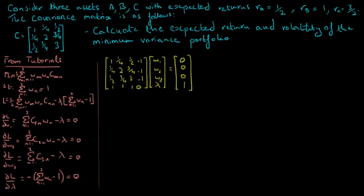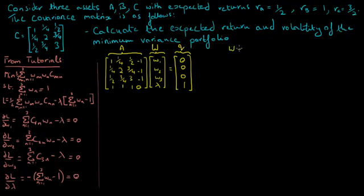To solve for the weights of the three assets as well as the parameter lambda, we have to invert the matrix that includes the covariance matrix and multiply it by the column vector of 0s and 1s. Let this matrix that includes the covariance matrix be called A. This column vector that represents the weights as well as the parameter lambda equals capital W. And this column vector that includes 0s and 1s be called Q. So the solution to the system is W equals A inverse times Q.